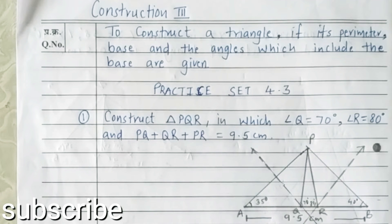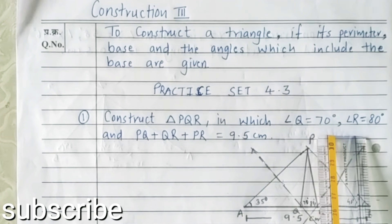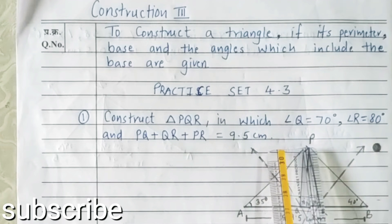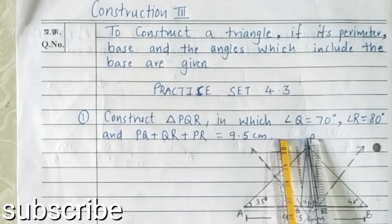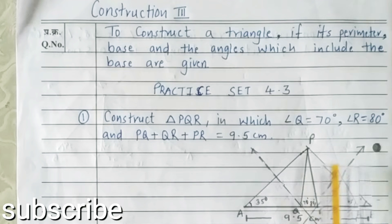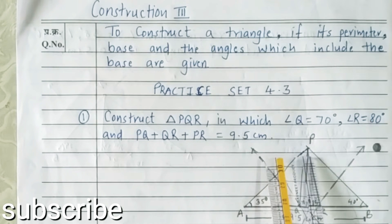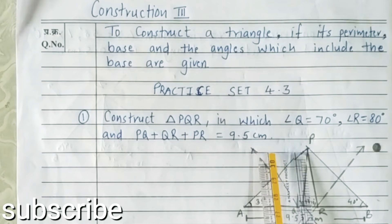The steps for this construction are: first, draw a base segment of length equal to the perimeter, 9.5 cm. This is our analytical figure. Two angles are given — angle Q is 70 degrees and angle R is 80 degrees. We have to make half of both angles. Half of angle Q (70°) is 35 degrees, and half of angle R (80°) is 40 degrees. Make a 35-degree angle at point A and a 40-degree angle at point B. Wherever both rays meet will be our point P.